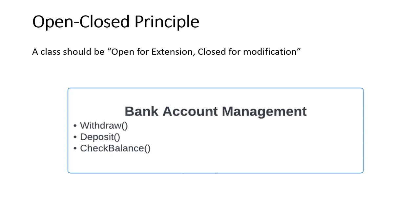The second principle is the Open-Closed Principle, which states that a class should be open for extension and closed for modification. In this example, we have a bank account management class with functionalities for withdraw, deposit, and check balance. The bank supports two types of accounts: checking and savings. If we want to extend it to include retirement or investment accounts, implementing all functionality in the base class would become quite cumbersome.